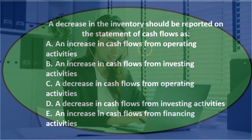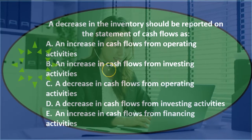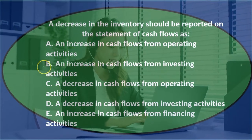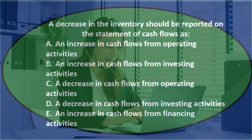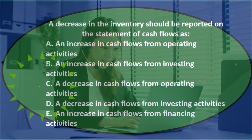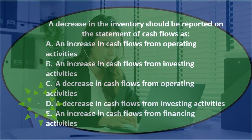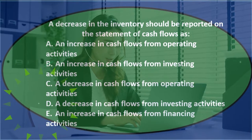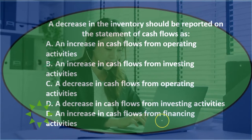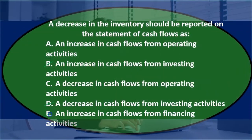We can eliminate non-operating activities. A says an increase in operating activities — that looks right. B says investing activities — probably not. C says a decrease in cash flows from operating activities — we'll keep that. D says a decrease from investing activities, and E deals with financing activities. So it looks like it's between A and C.